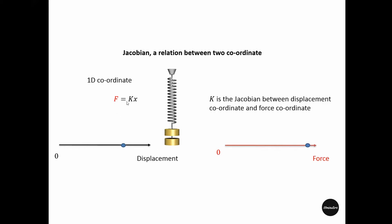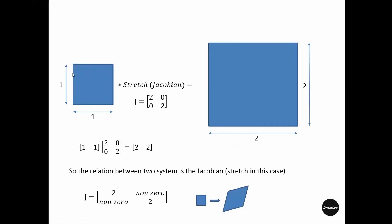Here we have a one-dimensional example; that's why the Jacobian is a constant. But if we have a two-dimensional space, the Jacobian would be a two-dimensional matrix. This is a square of dimension one by one. If we want to stretch it to make the square double, we can multiply this dimension with a stretch matrix.